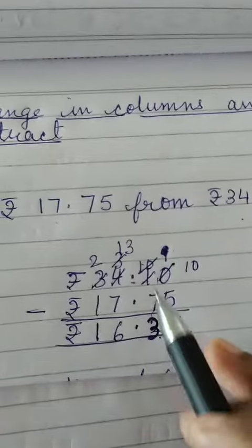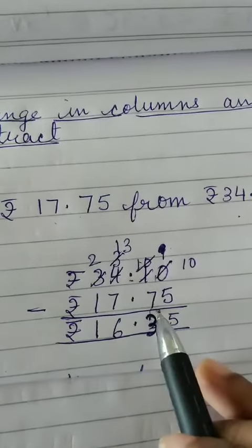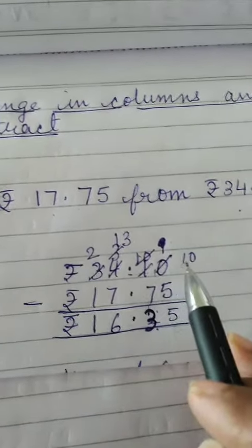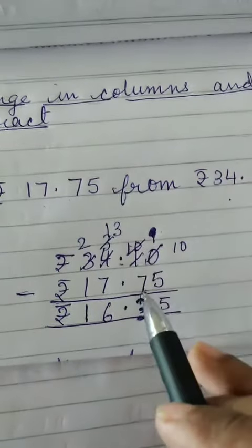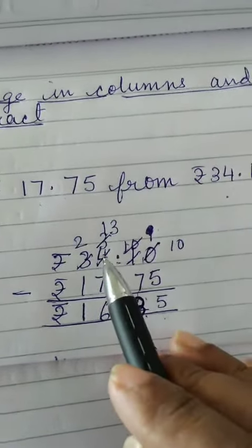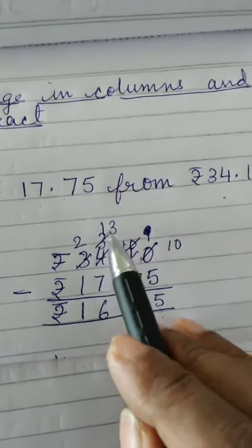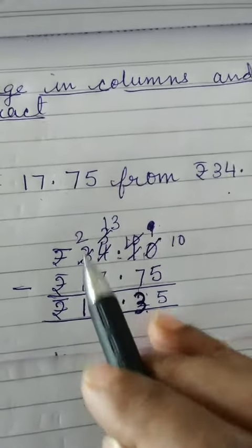I have subtracted here. Arranged properly in columns and then I have subtracted. 10 minus 5 is 5. Then again this has become 10. 10 minus 7 is 3. Then it has become 3. 13 minus 7 is 6 and 2 minus 1 is 1.